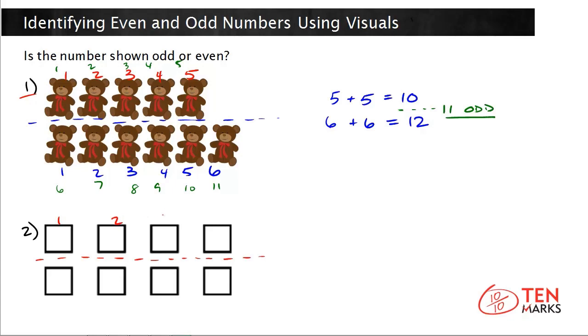In the top row there are 1, 2, 3, 4. And in the bottom row there are 1, 2, 3, 4. Already I can see that the two groups are equal which makes me think that the number shown is even.